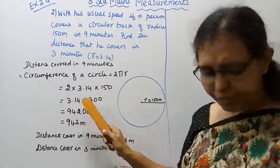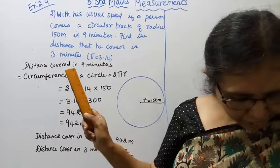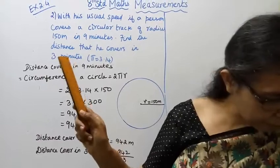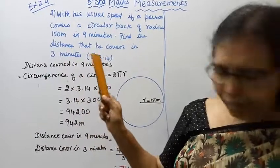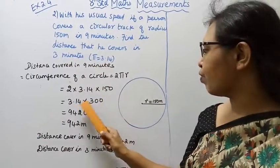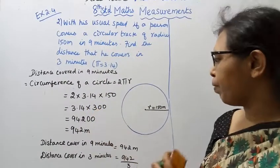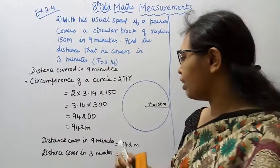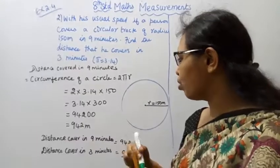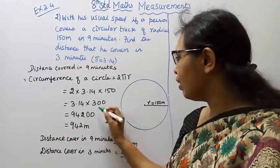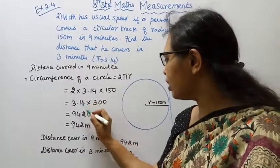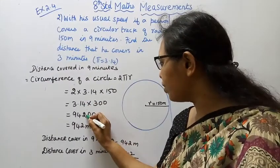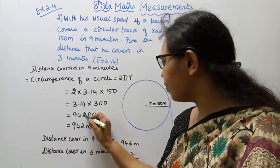Distance covered in 3 minutes: 942 ÷ 9 × 3. Multiply: 314 × 3 = 942. So distance covered in 3 minutes is 314 meters.